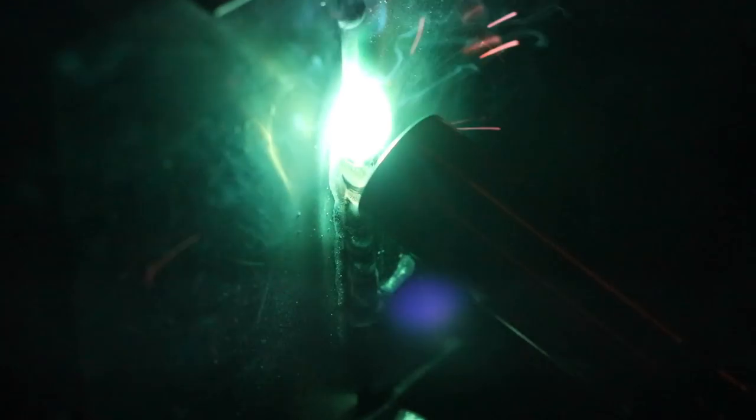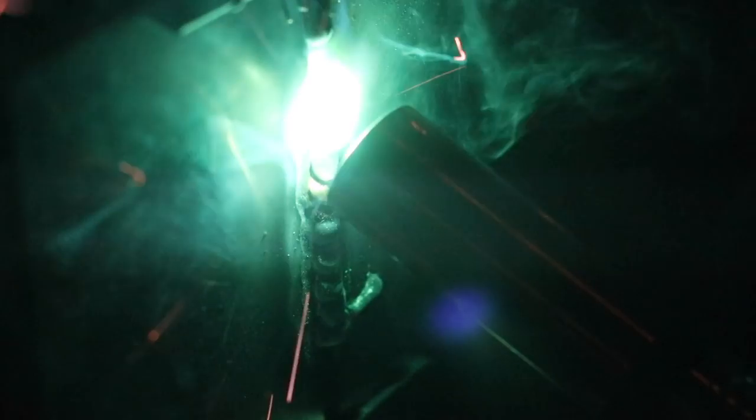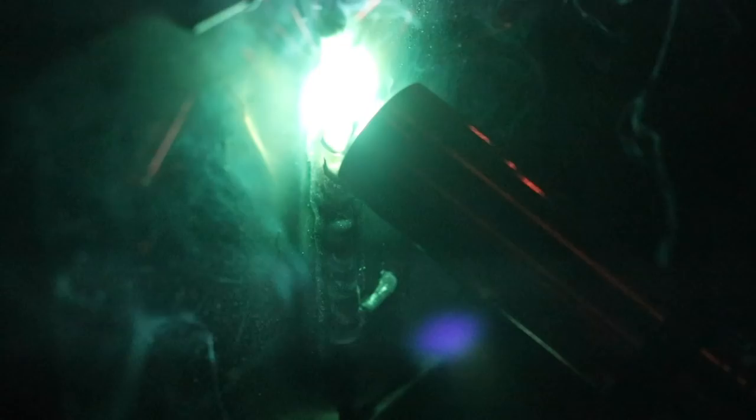So the key is not only to have the correct machine settings, which HTP provides a sheet with settings for the actual aluminum test with the machine where you can dial the machine in really close, but also the actual hand-eye coordination to find the right contact tip to work distance.